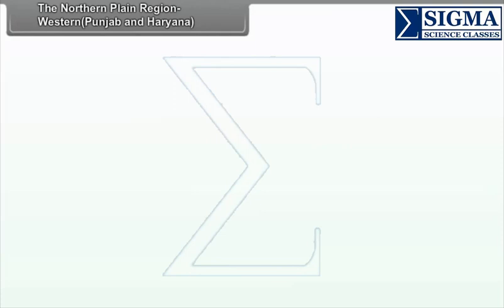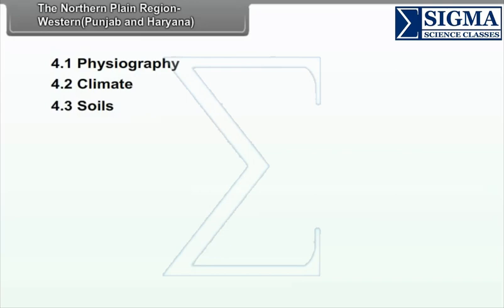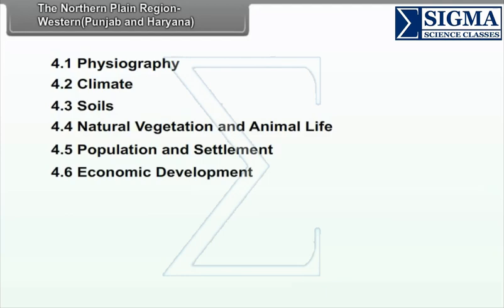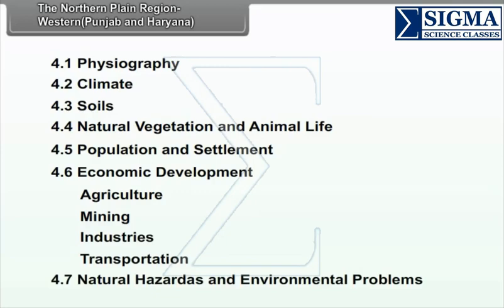Chapter 4: The Northern Plain Region - Western Punjab and Haryana. We will study the following points in this chapter: Physiography, Climate, Soils, Natural Vegetation and Animal Life, Population and Settlement, Economic Development (which includes Agriculture, Mining, Industries, Transportation), Natural Hazards and Environmental Problems.